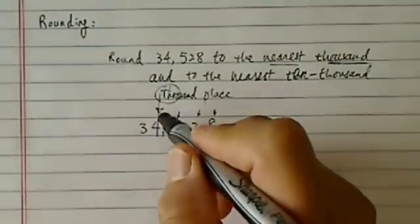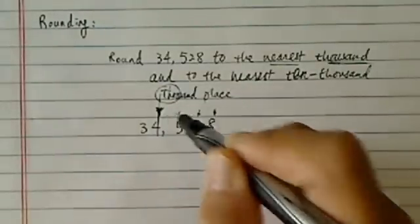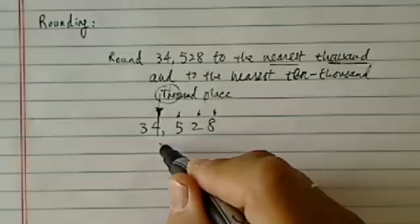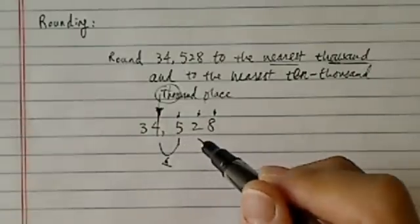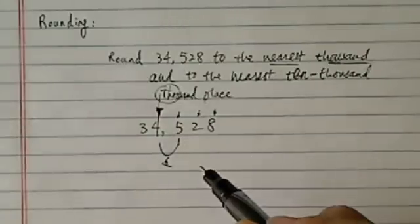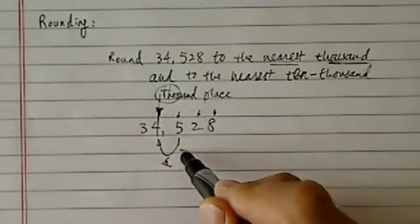So once we determine the place here, then what you do is you kind of look behind. There's supposed to be an eyeball. If the number behind you is bigger than five, five or above,